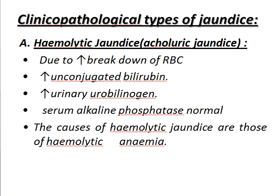Clinical types of jaundice: hemolytic jaundice, hepatocellular jaundice, and obstructive jaundice. These three are the clinical types of jaundice. Now about hemolytic jaundice — the other name of hemolytic jaundice is acholuric jaundice.